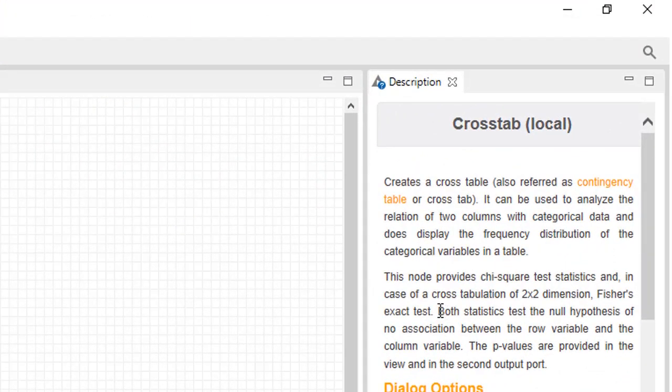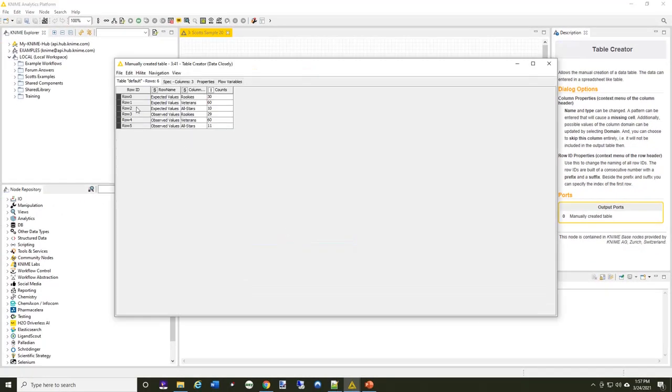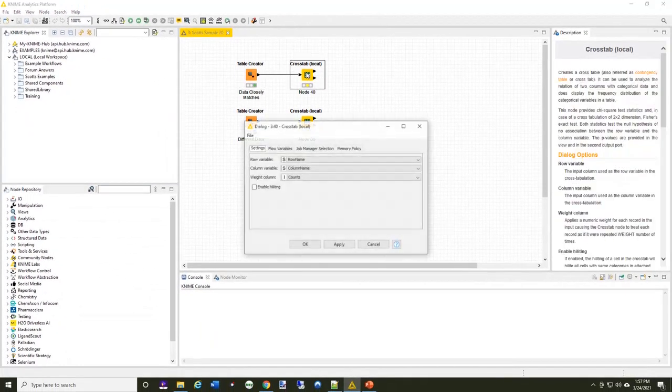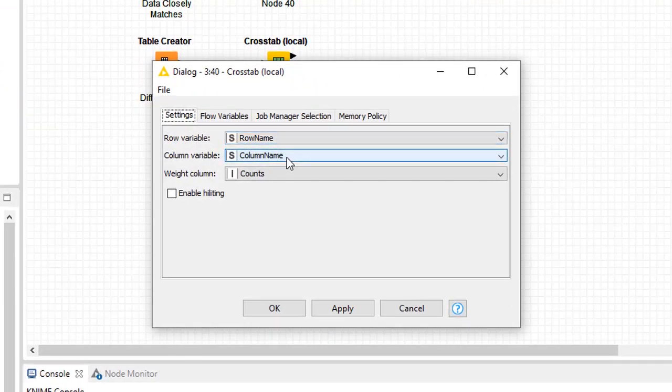What this one is going to do is test the null hypothesis that there is no association between the row variables. Basically, the null hypothesis is that there's no association between the expected values and the observed values. For my cross-tab, I've told it the row name column and the variable column, and counts is the column that I want to apply it to.